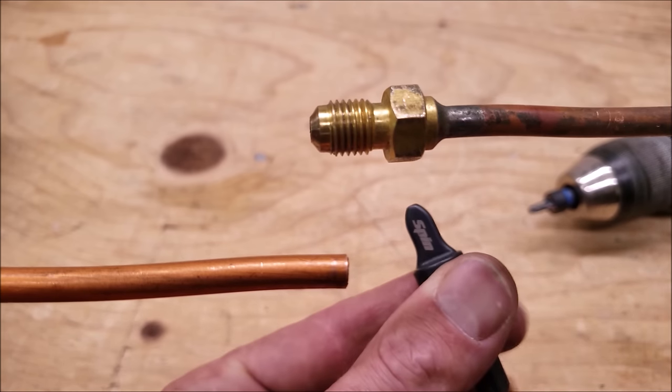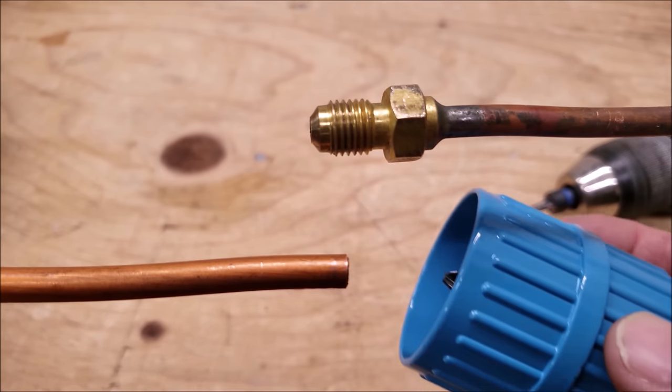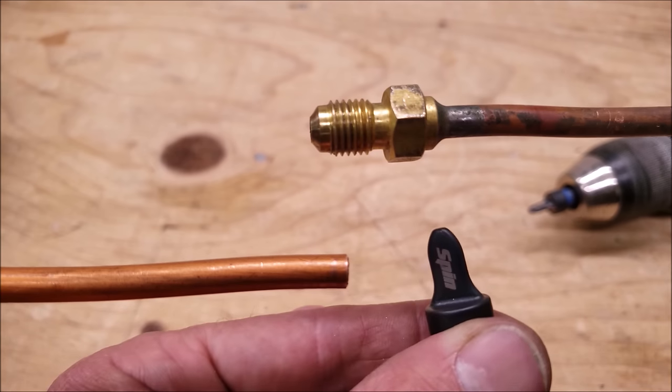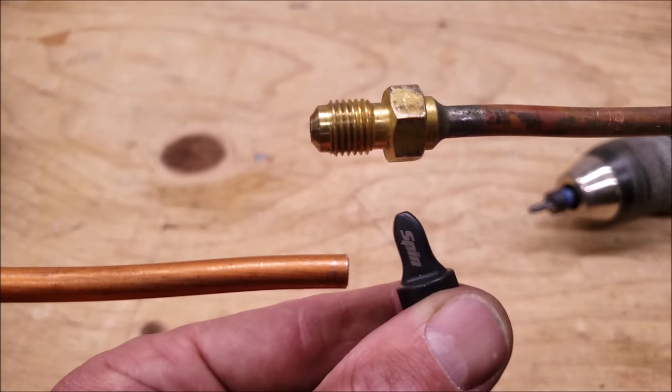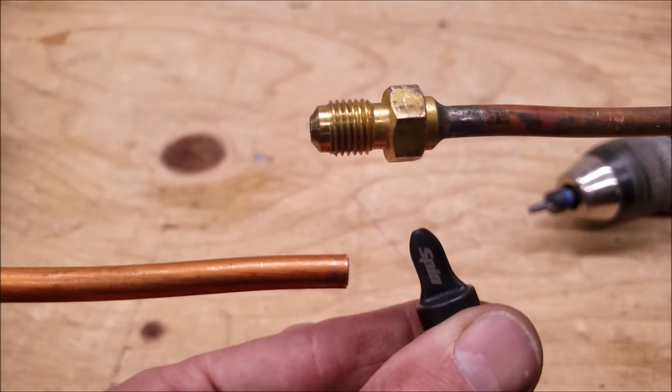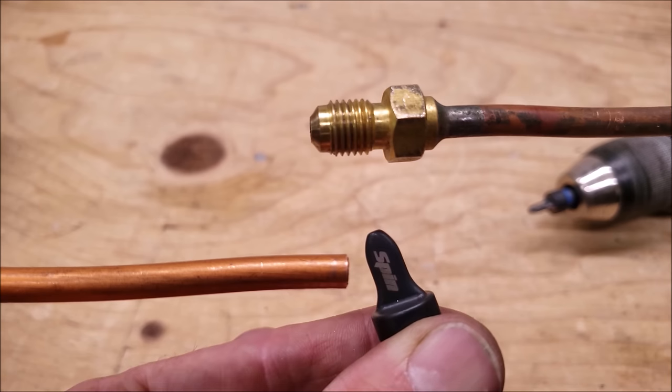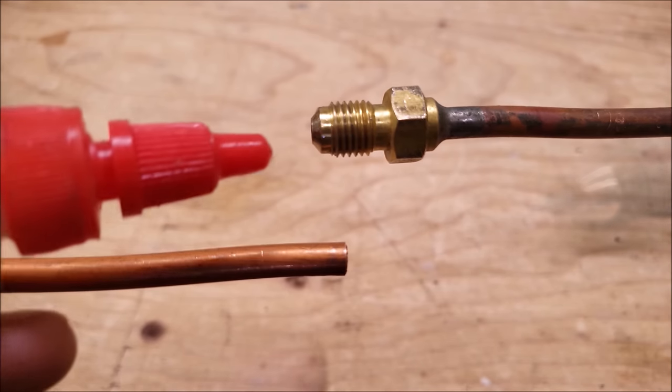Before I use this to enlarge and heat up the copper to make the flare, I do ream the copper tube. I know a lot of people don't do that, but I do. The reason for that is if you use this tool, it's a multi-step process to flare the copper tube. I don't want to be in a hurry trying to knock all the copper dust out after I heat this tube up.